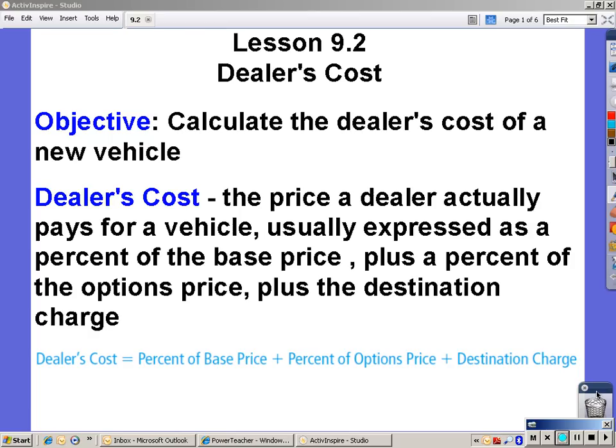Alright, lesson 9.2, dealer's cost. The objective is to calculate the dealer's cost of a new vehicle. The dealer's cost is the price a dealer actually pays for a vehicle. This is usually expressed as a percent of the base price, plus a percent of the options price, plus the destination charge. The dealer's cost equals the percent of the base price, plus the percent of the options price, plus the destination charge.